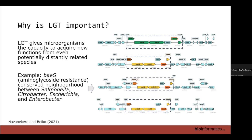Here's an example with the aminoglycoside resistance gene baeS, which has been identified as having a common origin because of its conserved neighborhood of genes. You can see there's a pretty well-conserved neighborhood of genes in three different species — Salmonella, Citrobacter, E. coli, and Enterobacter. So all of these are recipients of the baeS gene without having had to evolve that resistance functionality on their own.